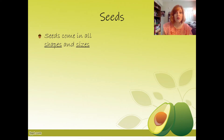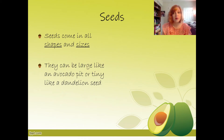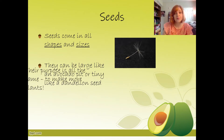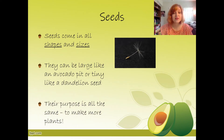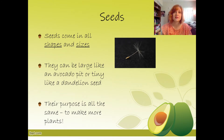Seeds come in all shapes and sizes. They can be large, like an avocado pit in this PowerPoint, or tiny, like a dandelion seed — and you've seen dandelion seeds; they're very small. But their purpose is all the same, which is to make more plants. No matter the shape or the size of the seed, its only job is to make another plant, which is why plants make seeds — so that they don't die out.